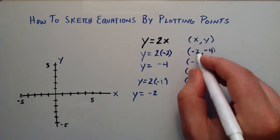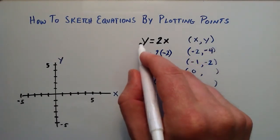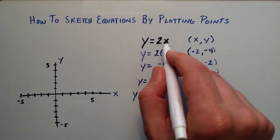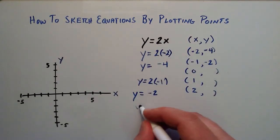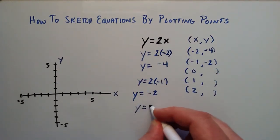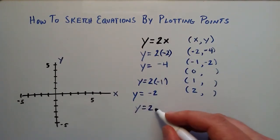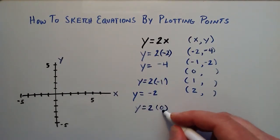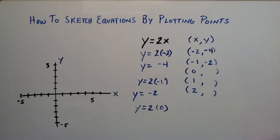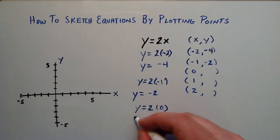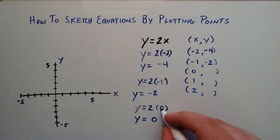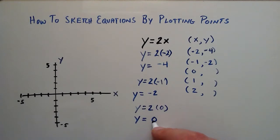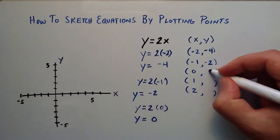When x is 0, y equals 2 times 0. Anything times 0 is 0, so y is equal to 0. So an x value of 0 gave us a corresponding y value of 0.